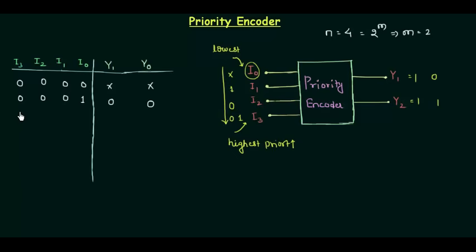Let's move to the next case: i3 is 0, i2 is 0, i1 is 1. This is the case we just discussed — we don't have to see the value of i0, it is simply don't care. Whether i0 is 0 or 1, the output will still reflect i1. So i0 is don't care and the output y1, y0 is 0, 1.